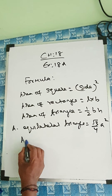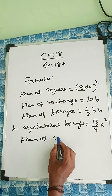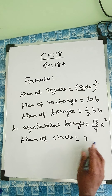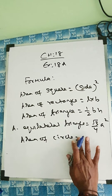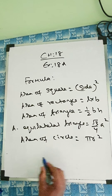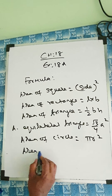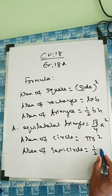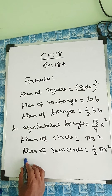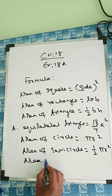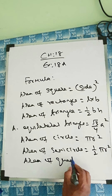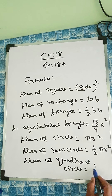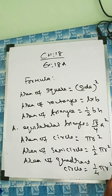Area of circle is pi R squared. Area of semicircle is half pi R squared. And area of quarter circle is one-fourth pi R squared.